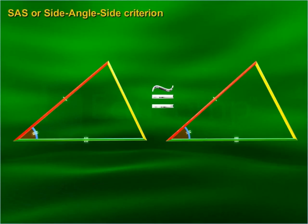SAS, or Side-Angle-Side criterion: if two sides and the included angle of one triangle are equal to the corresponding two sides and the corresponding included angle of the other triangle, then the triangles are said to be congruent.